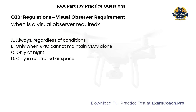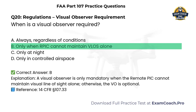Regulations. Visual observer requirement. When is a visual observer required? A. Always, regardless of conditions. B. Only when the remote pilot cannot maintain visual line of sight alone. C. Only at night. D. Only in controlled airspace. Correct answer: B. A visual observer is only mandatory when the remote pilot cannot maintain visual line of sight alone; otherwise, the VO is optional.